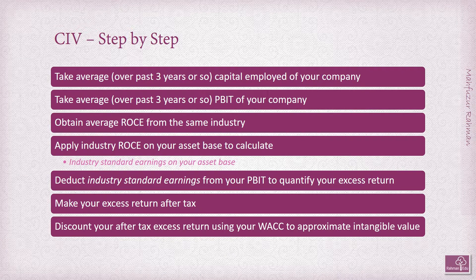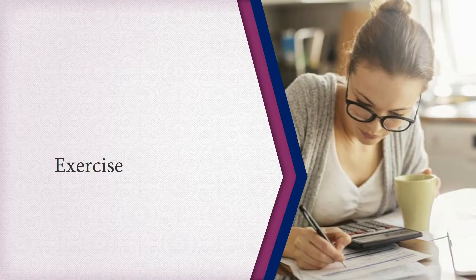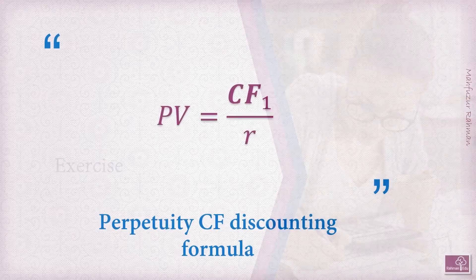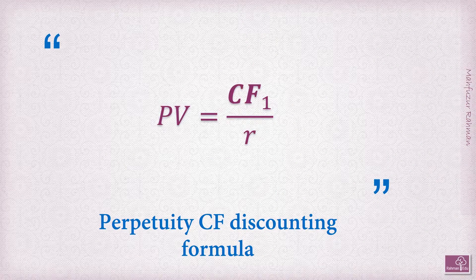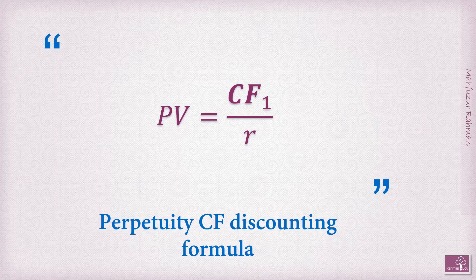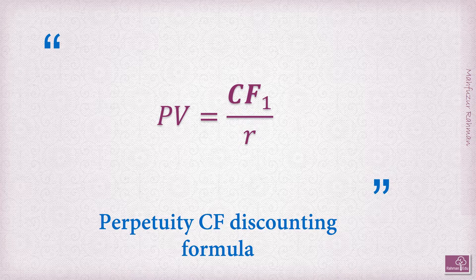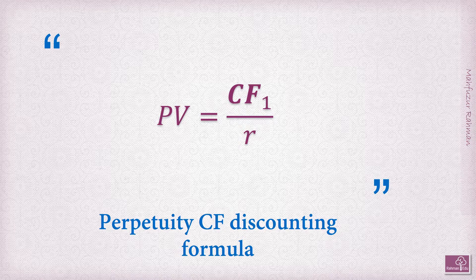Let's put this into an exercise so you learn it better. For the exercise we are going to use the formula: Present Value = CF1 / r, where r is the rate of discounting — in our case, we will use WACC. Now that you have learned the formula, let's get to the business.